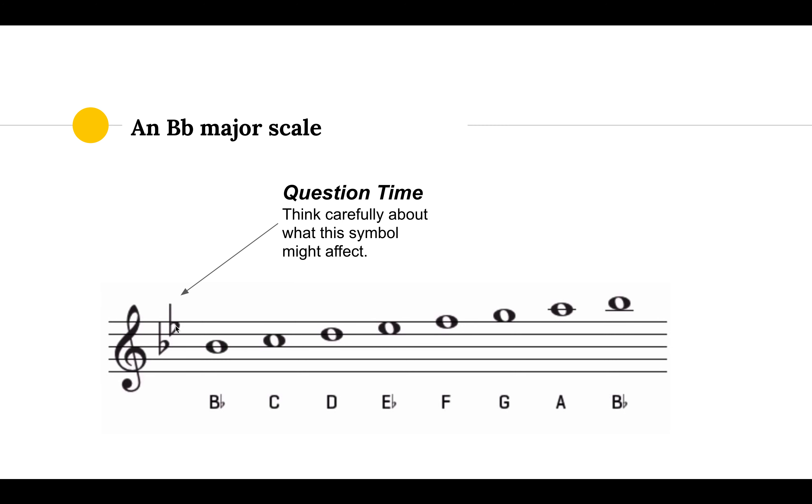Now we've got a second flat here on the fourth space. So for the notes on the spaces, we have face in the space. We just spell face: F, A, C, E. So we have an E-flat, and as you can see, the E has a flat sign next to it because of our key signature.